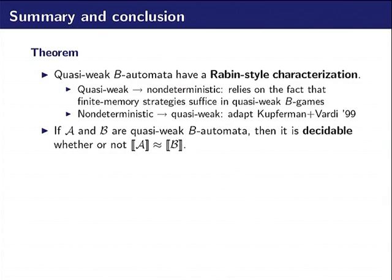Moreover, we can decide if A and B are two quasi-weak B automata, we can decide the equivalence.